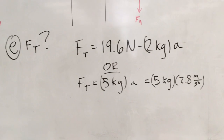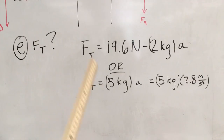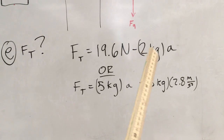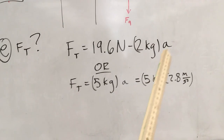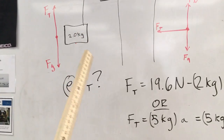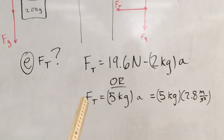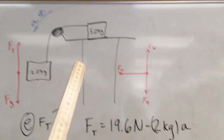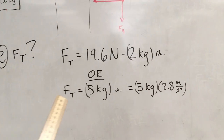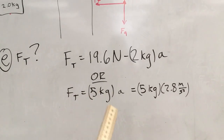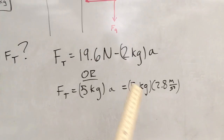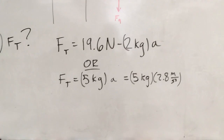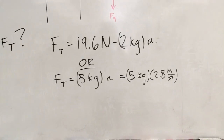Part E asks us to find the force of tension in the rope. From the equations in Part B, we know the force of tension is 19.6 Newtons minus two kilograms times the acceleration. But there's an even easier equation from analyzing the five kilogram box: force of tension equals five kilograms times the acceleration. Multiplying that out, we get 14 Newtons for the tension.